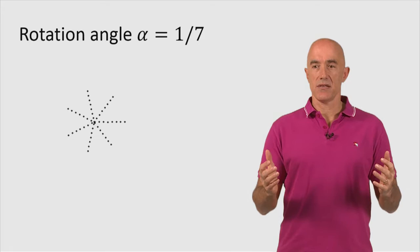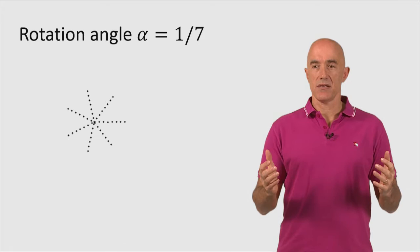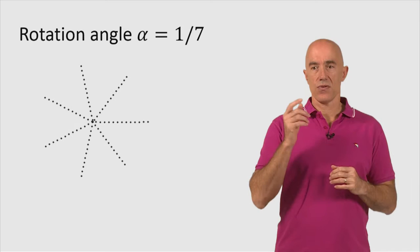And you start seeing these radial lines from the center, right? One, two, three, four, five, six, seven. There are seven lines coming out of the center.